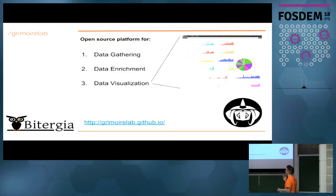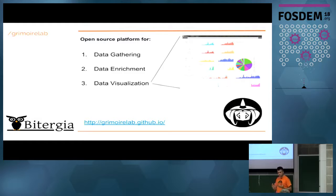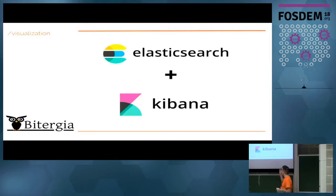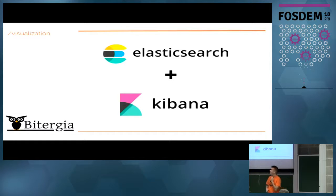And finally, there is data visualization. We work with Elasticsearch and Kibiter, which is a soft fork of Kibana, and we're going to focus on the data visualization. How many of you know Kibana? Good. If you know Kibana, you know the typical dashboard where you can have bar charts, pie charts, tables, line charts. But there's also a network visualization inside Kibana — how can we get these cool networks?